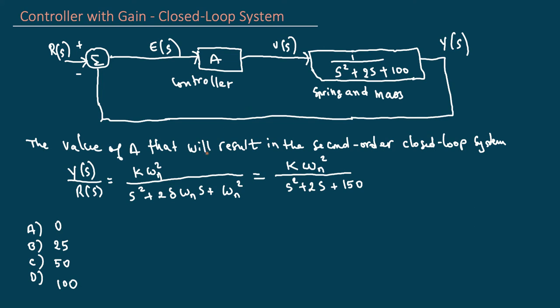The value of A - the question here is to find the value of the gain A that would result in this equation over here. This equation here is the closed-loop function, Y(S) over R(S). The methodology here is to try to find Y(S) over R(S) from this figure right here, and if you can equate them together, then you'll be able to calculate what the gain is.